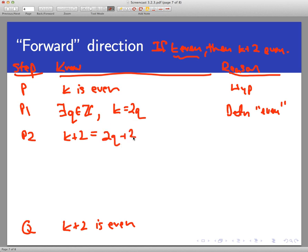Since k is even, there exists an integer, let's say q, such that k equals 2q, and that is the definition of even. Now I want to say something about k plus 2. So let's take line P2 and just add 2 to both sides of this equation. So 2q plus 2. I will call it algebra. What I did was add 2 to both sides of an equation.